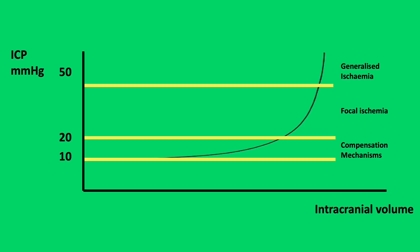The y-axis is ICP in mmHg and the x-axis is intracranial volume. As shown on the graph, there is an initial compensation phase where increases in intracranial volume result in small increases in intracranial pressure. Then there is a decompensation phase, where small changes in intracranial volume result in significant increases in pressure.